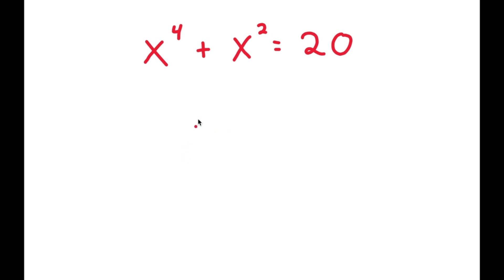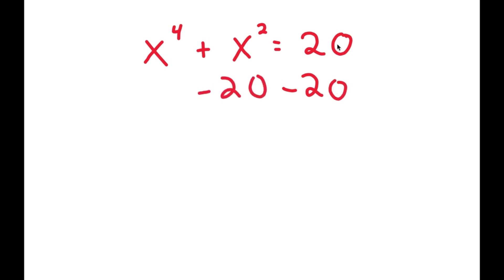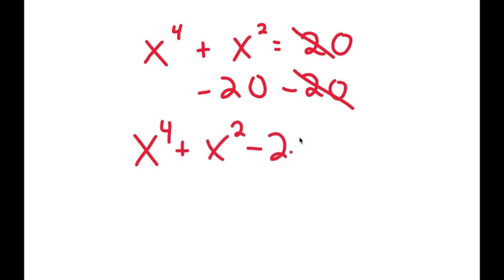In this equation, I have x to the power of 4 plus x squared is equal to 20. To solve this, I'm going to first start by subtracting 20 on both sides so we can have all our terms on one side. So I get x to the power of 4 plus x squared minus 20 is equal to 0.